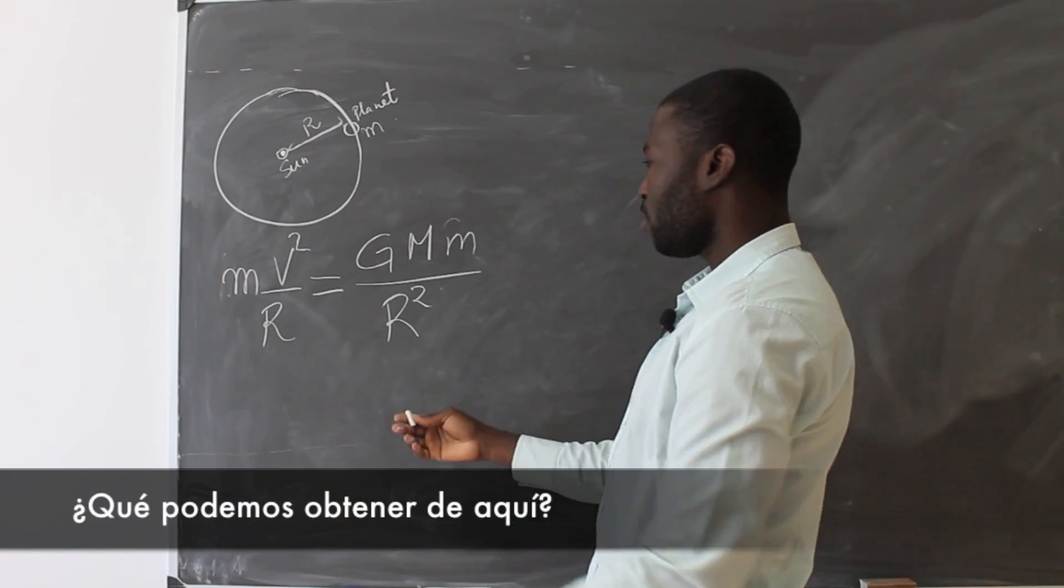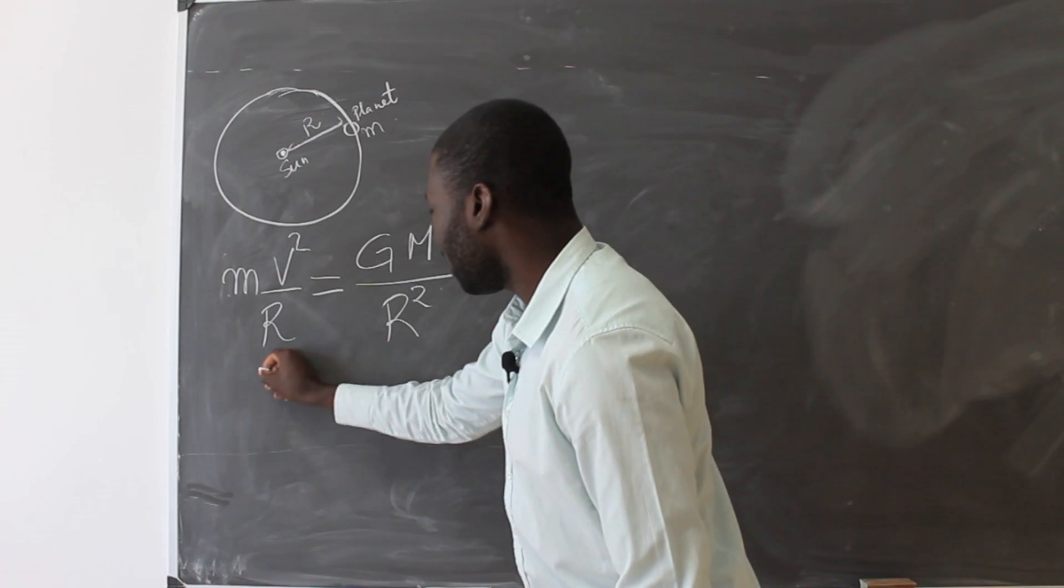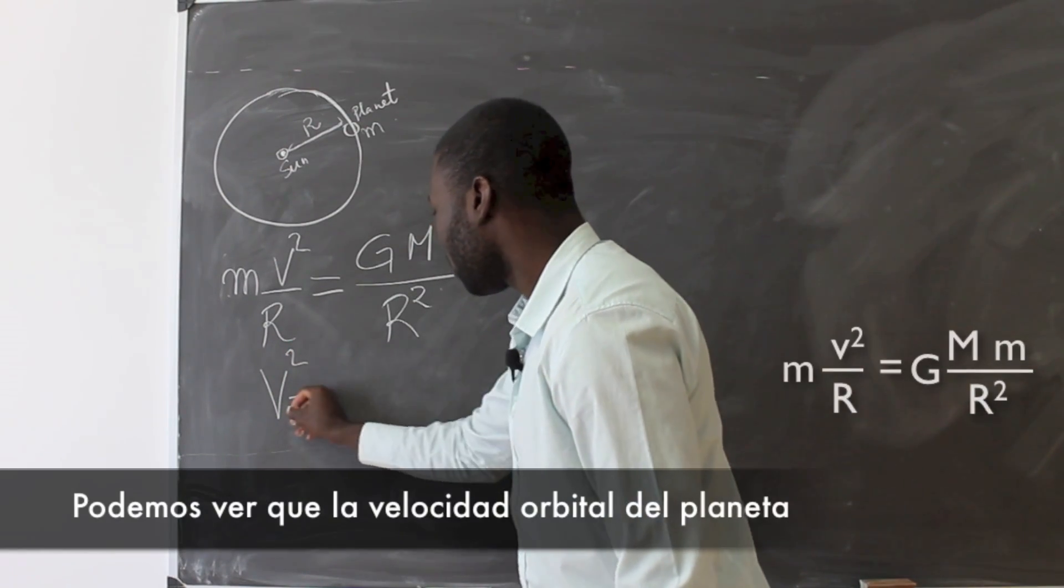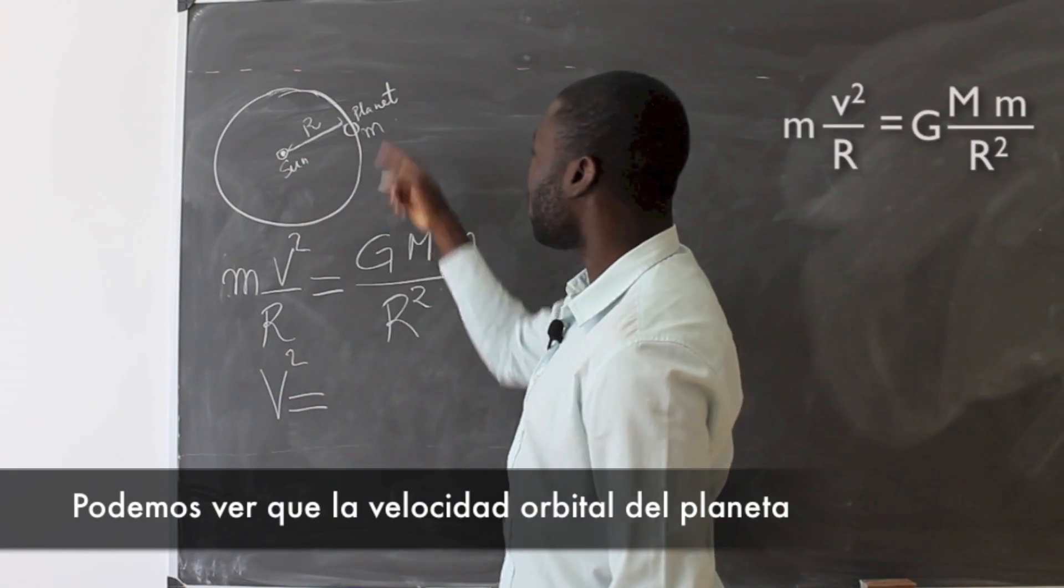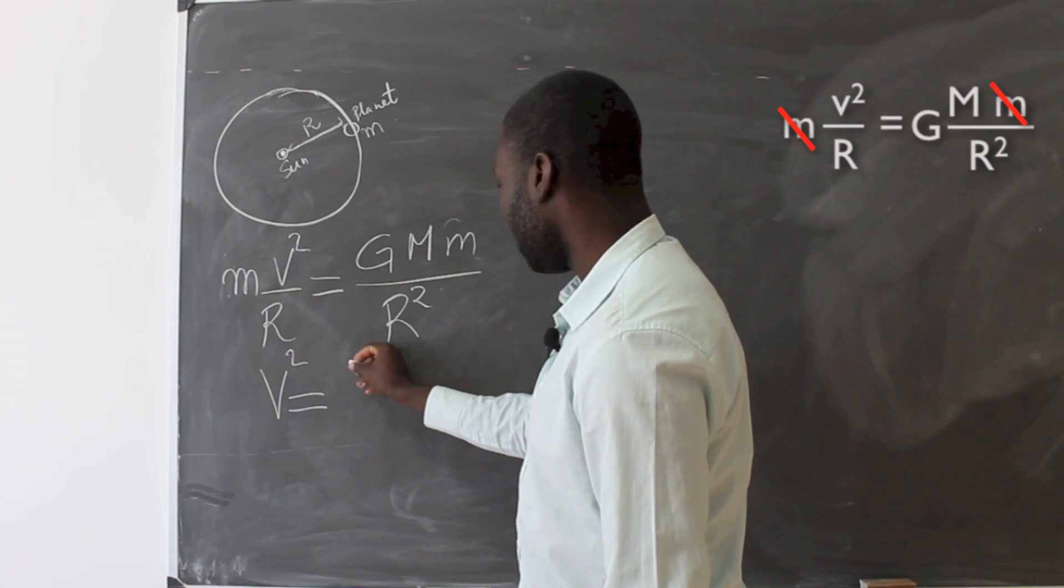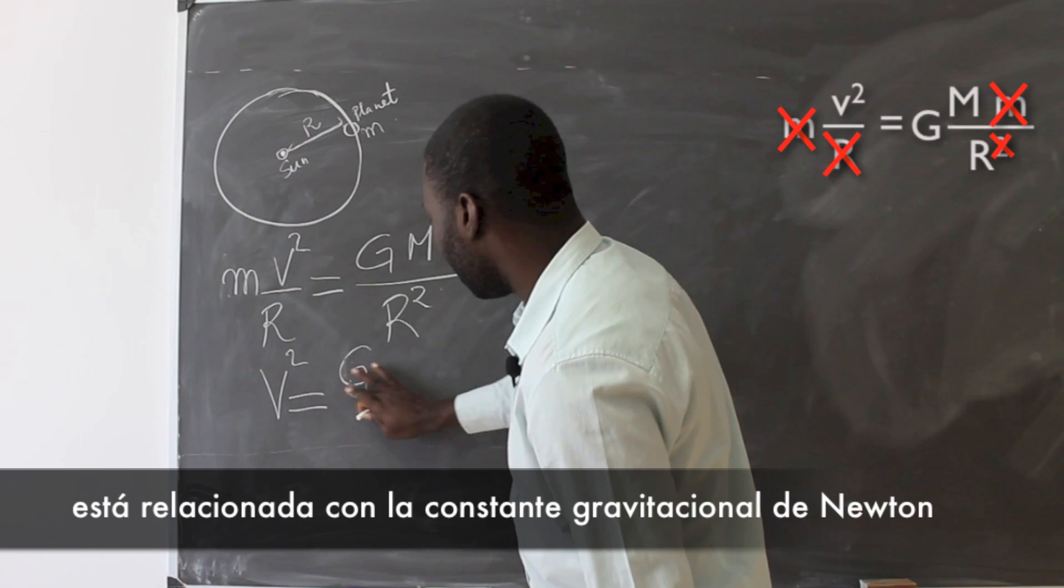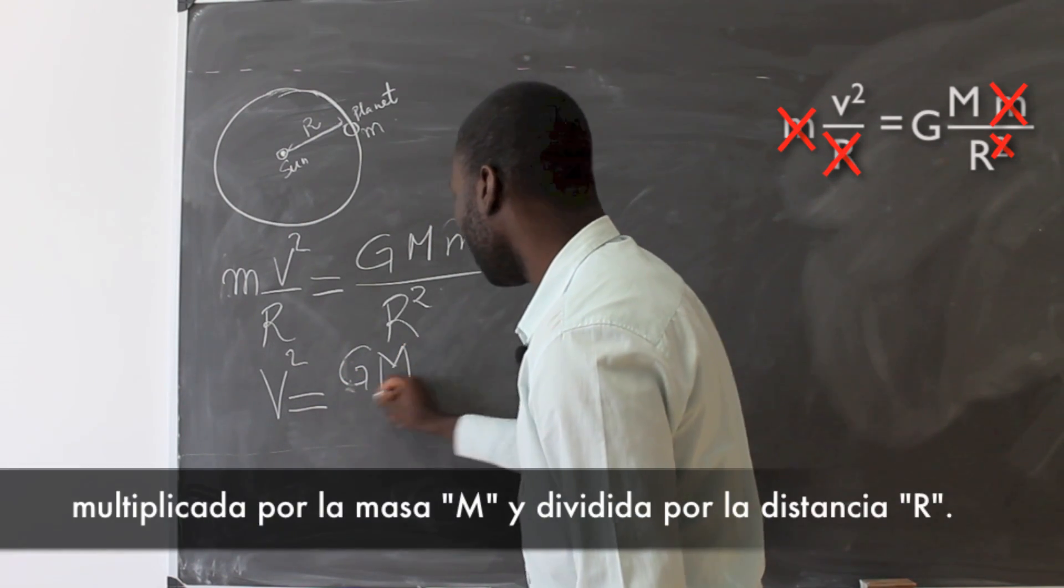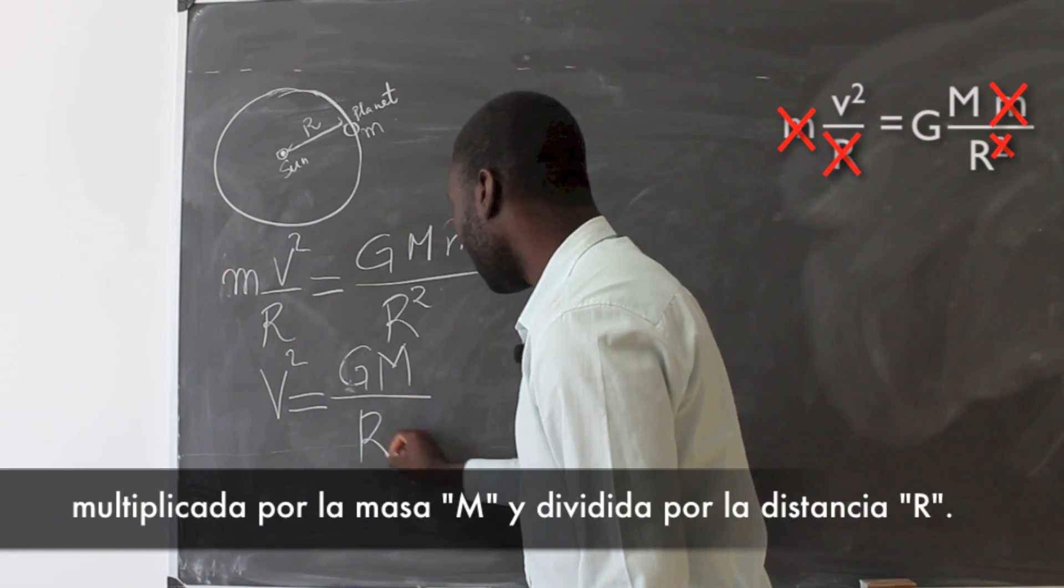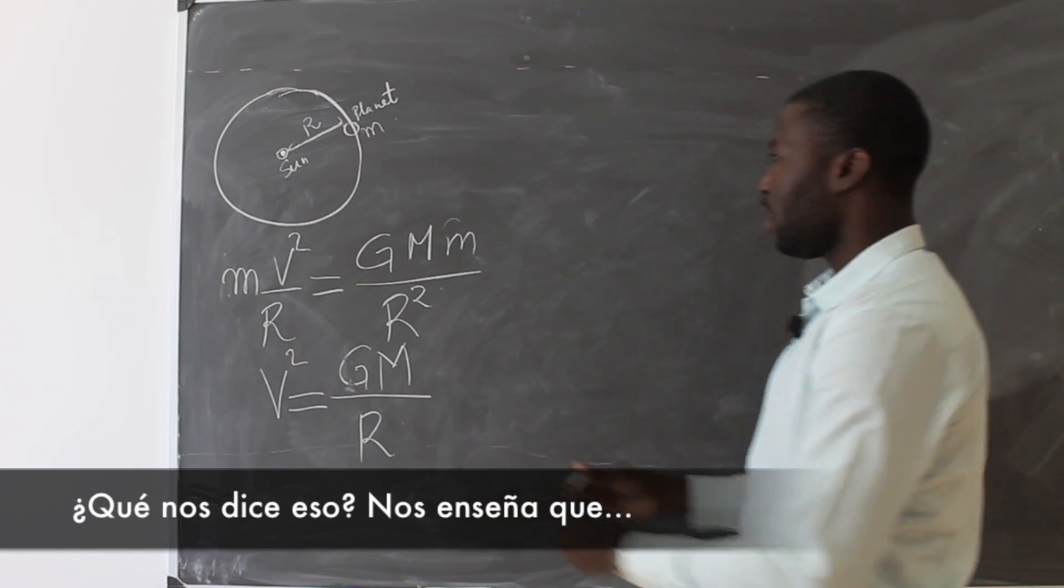So from this what can we say? We can see that the velocity, the orbital velocity of the planet, is given by the Newtonian gravitational constant times the mass over R. So what does this tell us?